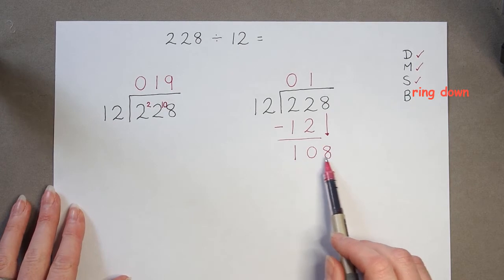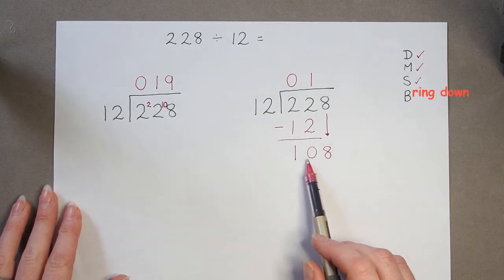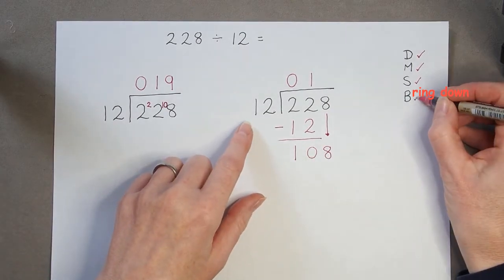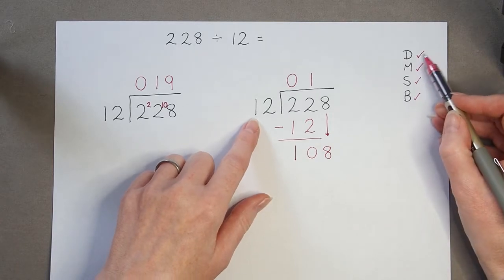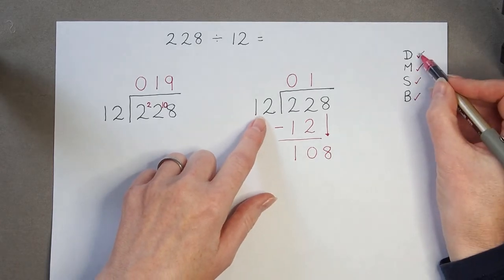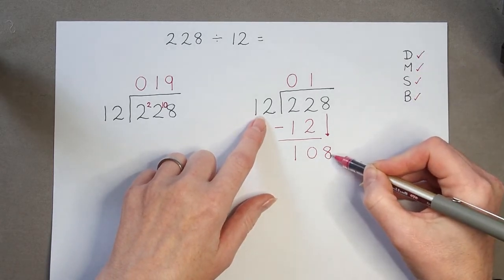So, let's complete our calculation. 108. And now we go back. We've done our bring down. We go back to the top and we start all over again with divide.